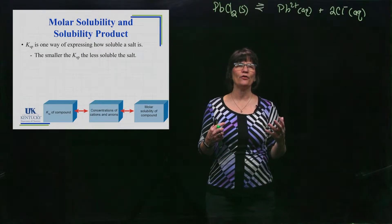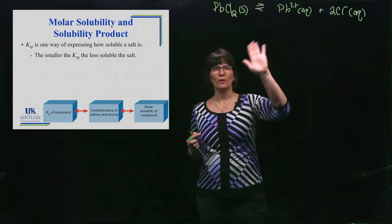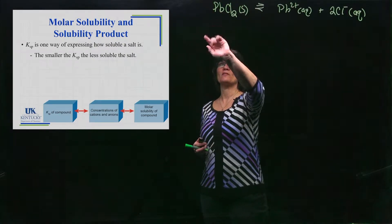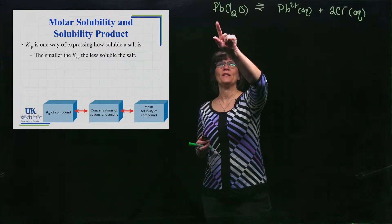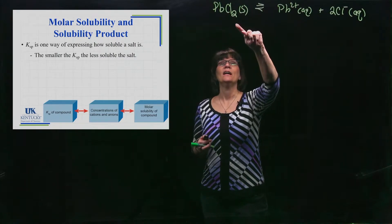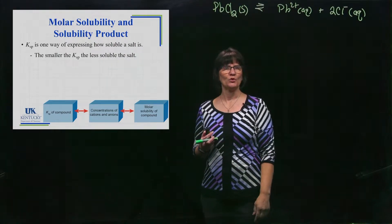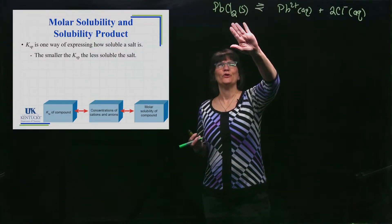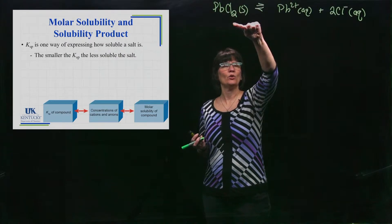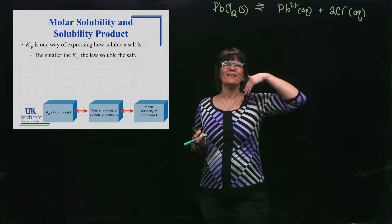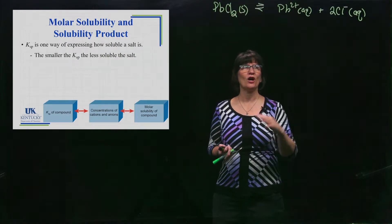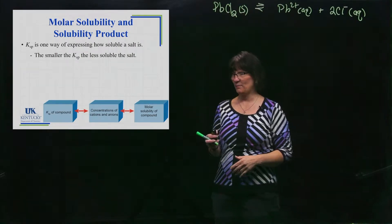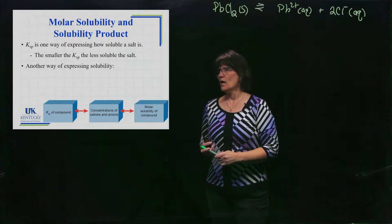You cannot compare salts with very different formulas using KSP alone. But if you have a bunch of different formulas with a 1-to-2 ratio between the cation and the anion, then you could make a judgment of which is more or less soluble. The reason they must share the same formula ratio is because you're raising concentrations to the power of their coefficients — those squares and cubes affect things differently.